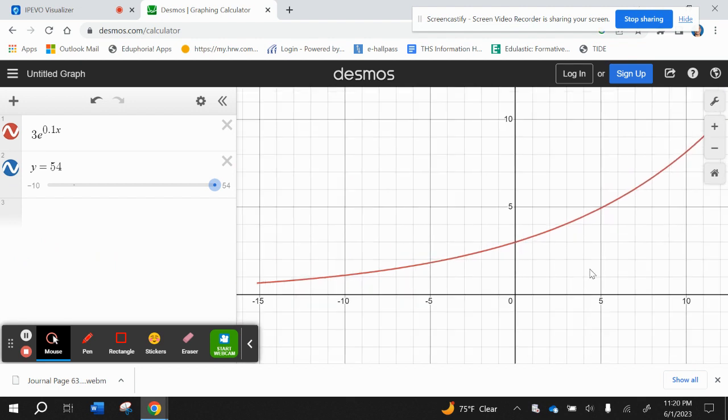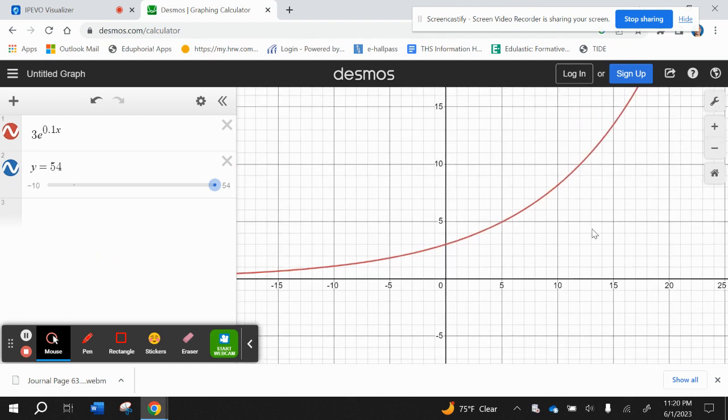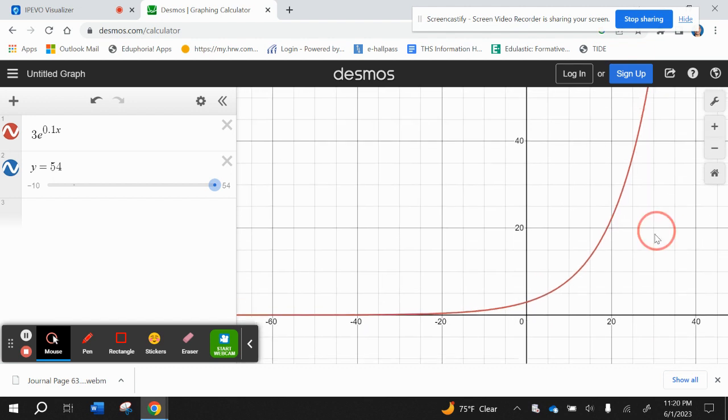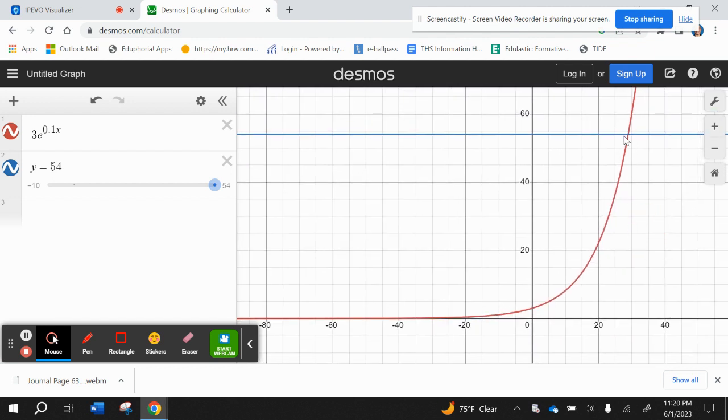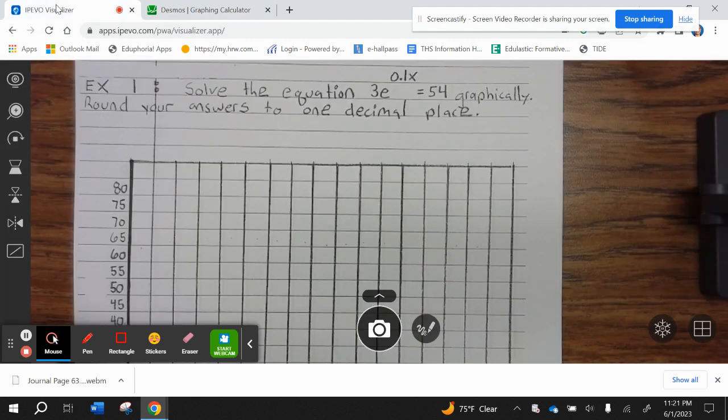I'm going to zoom out. And then our point of intersection is, let's just round that to 29. So what we're going to do: 29, 54.